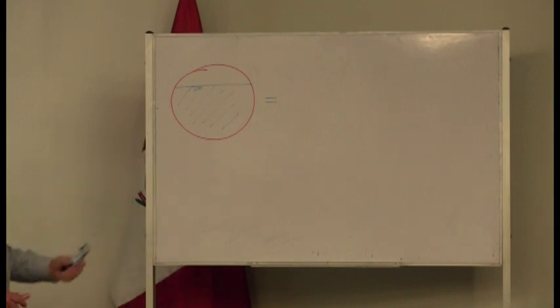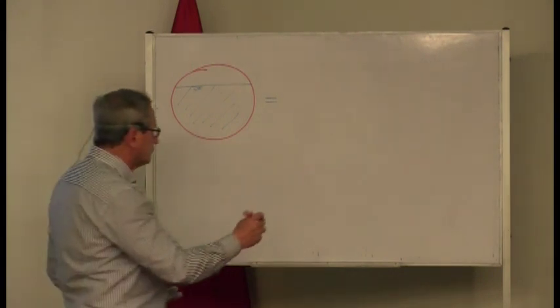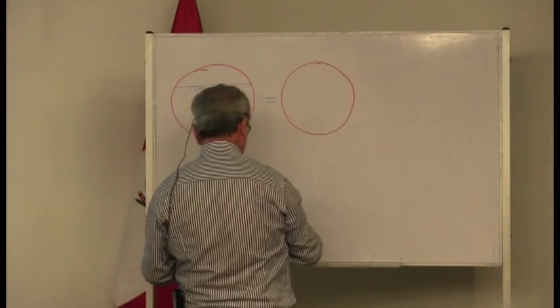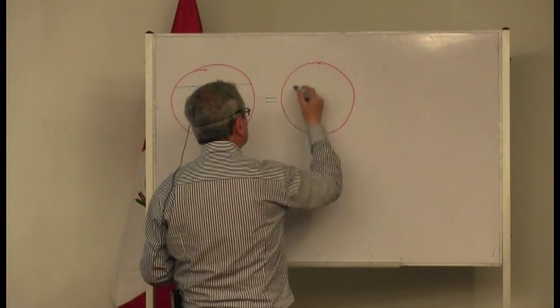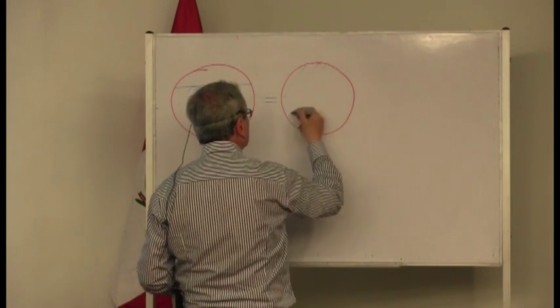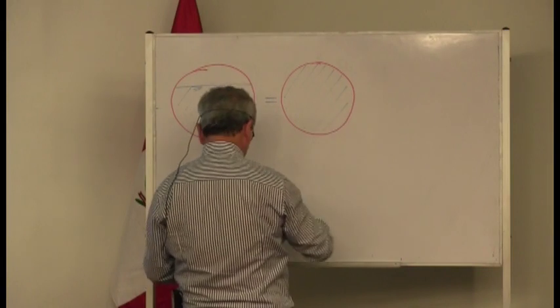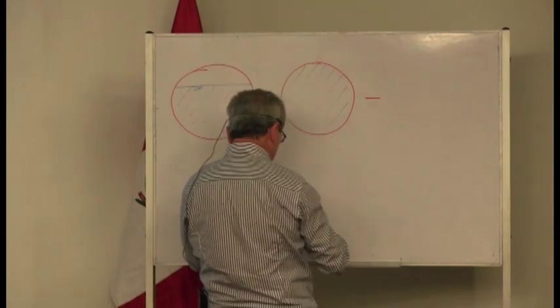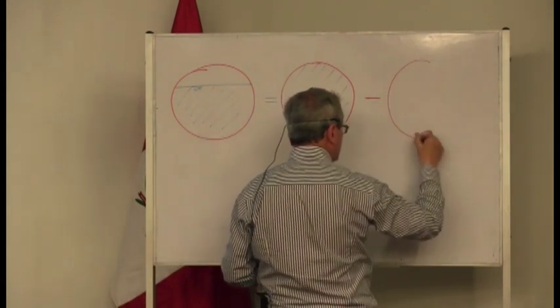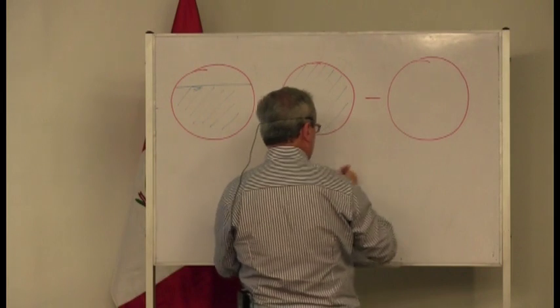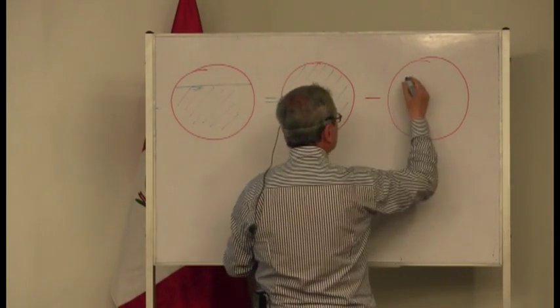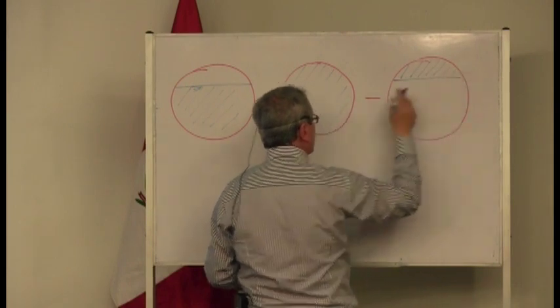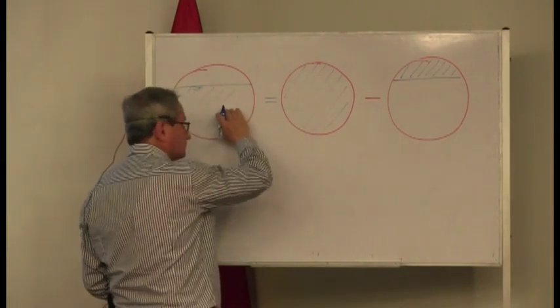Para poder calcular esa área, podríamos decir lo siguiente, que esta área no es sino el área total, es el área total, a lo cual, ¿qué le restamos? Le restamos el área del segmento circular. O sea, le restamos esta área. O sea, si al área total le resto esta área, lo que me queda es esto.